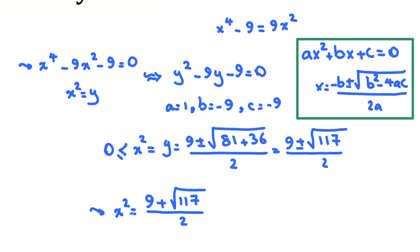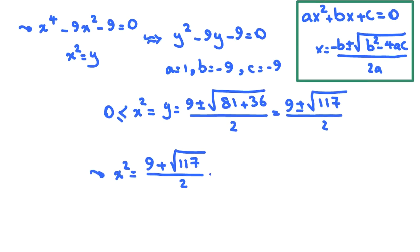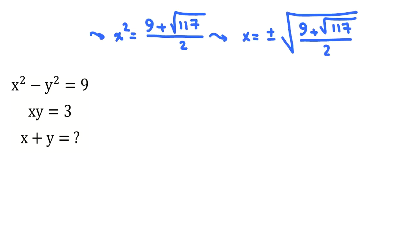Now we found x squared. So I should find x. x will be plus minus root 9 plus 117, root 117, all over 2.